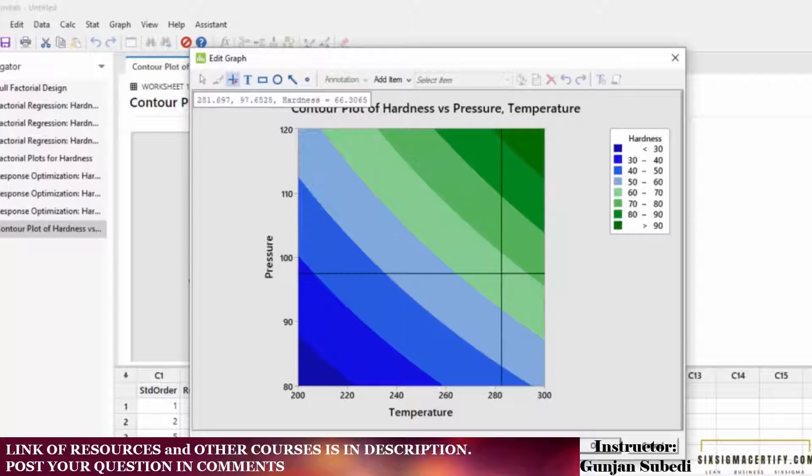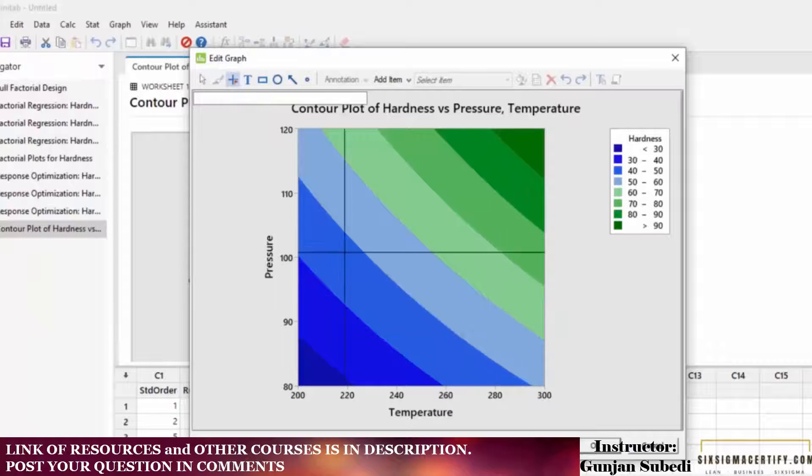That means you get same range of response for this color, same range of response for this and similar colors. This is all about the contour plot.